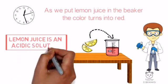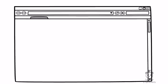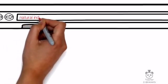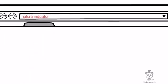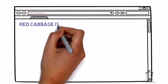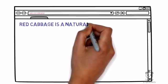And now, let us make a small and quick review about the natural indicator of red cabbage. Red cabbage is a natural indicator that detects the presence of acid, base, or neutral solution.